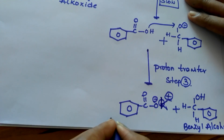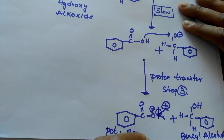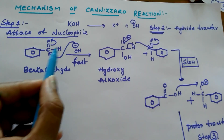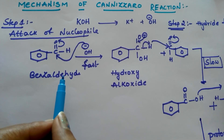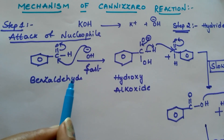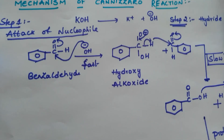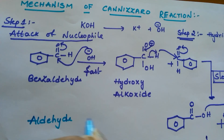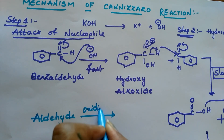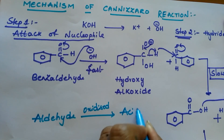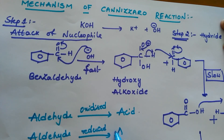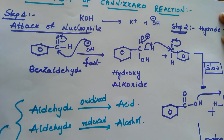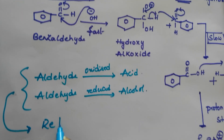It forms potassium benzoate. See students — in the Cannizzaro reaction, this is a very very important point: the aldehydes which are not having alpha hydrogens react with each other. One aldehyde undergoes oxidation — it is oxidized into an acid. Another aldehyde molecule is reduced into alcohol. Both oxidation and reduction reactions take place in the Cannizzaro reaction. That is why we call this reaction a redox reaction.